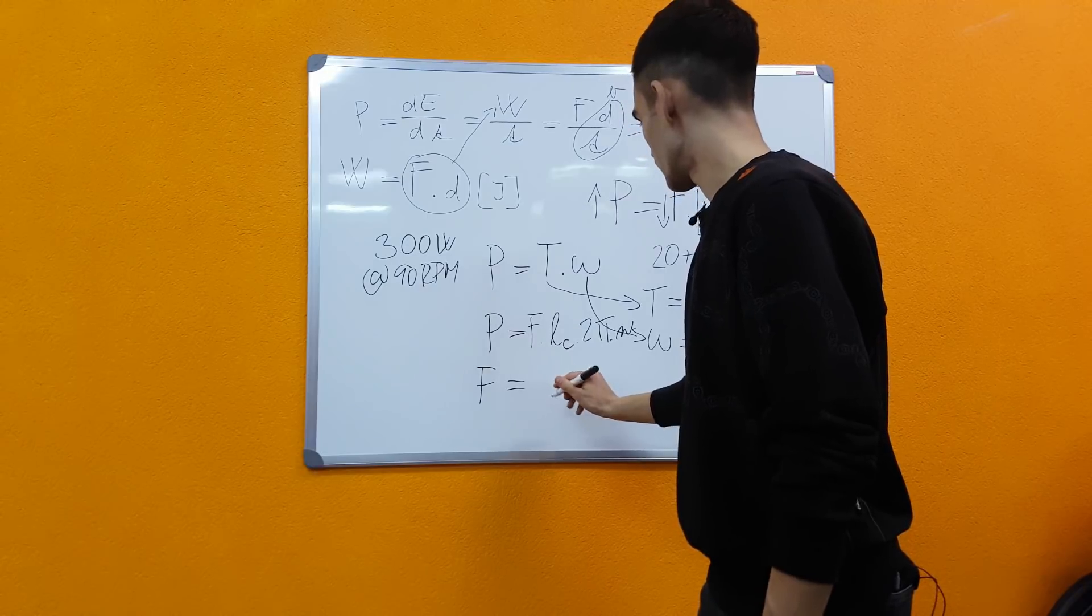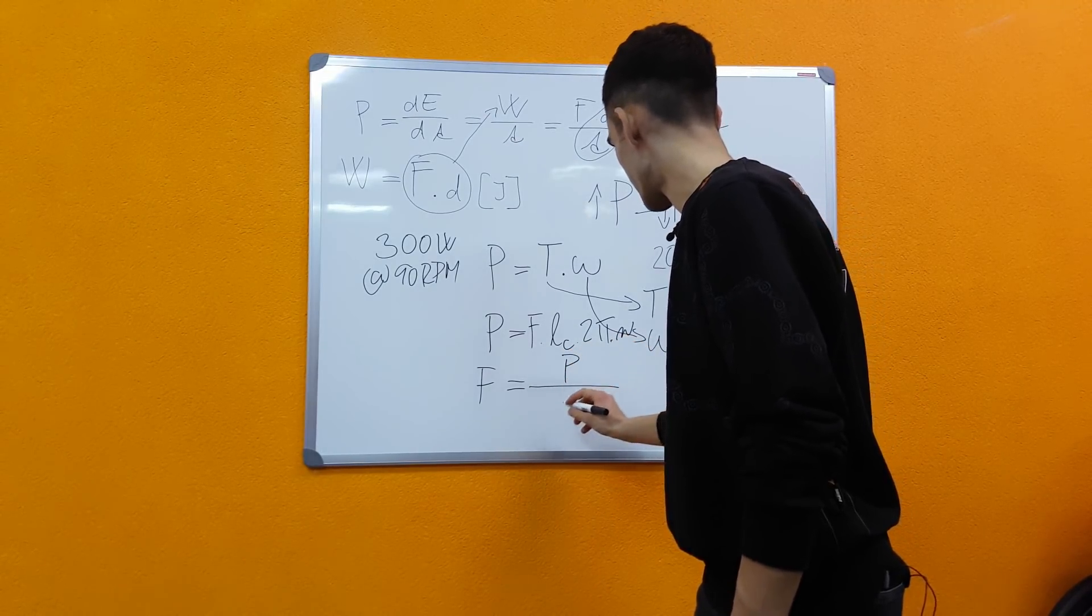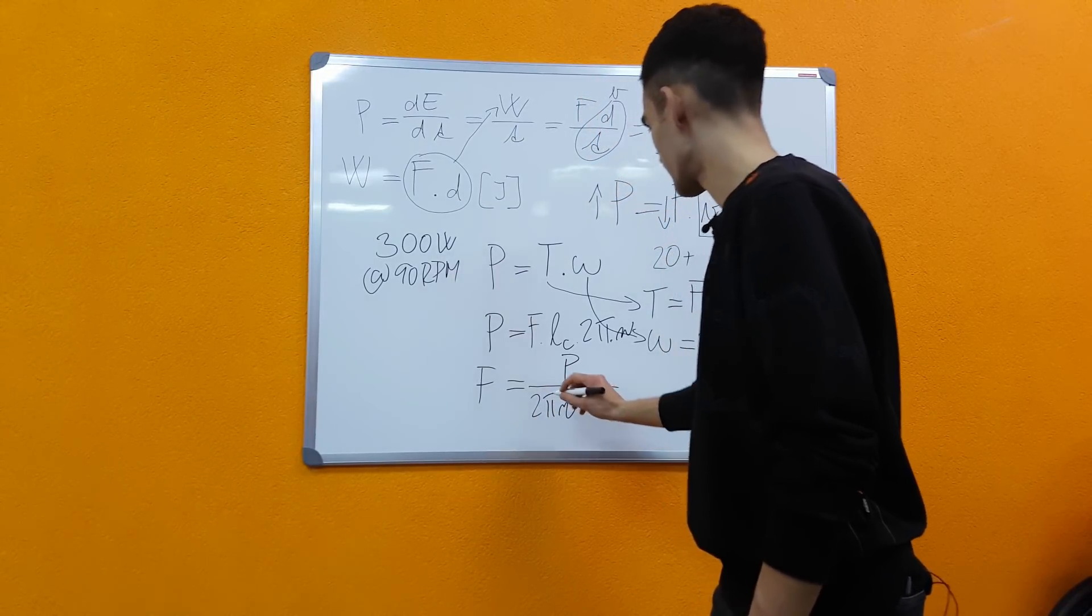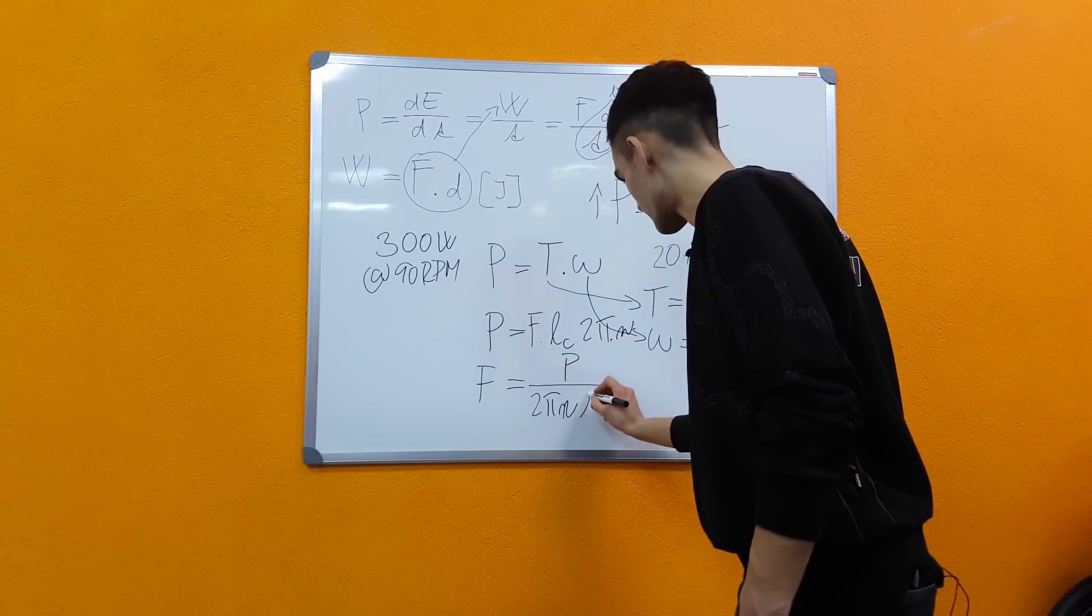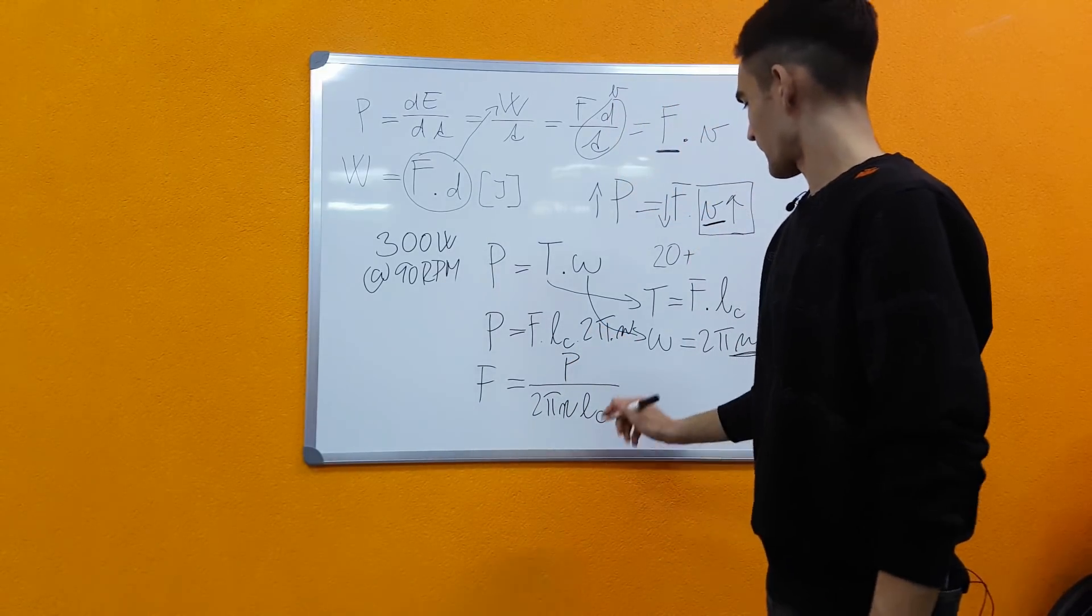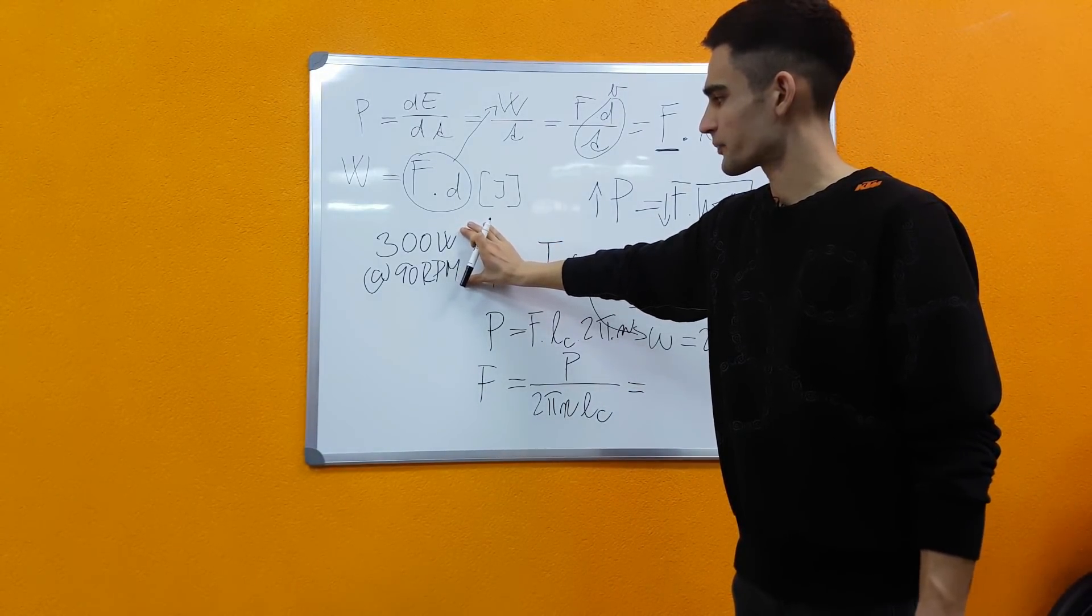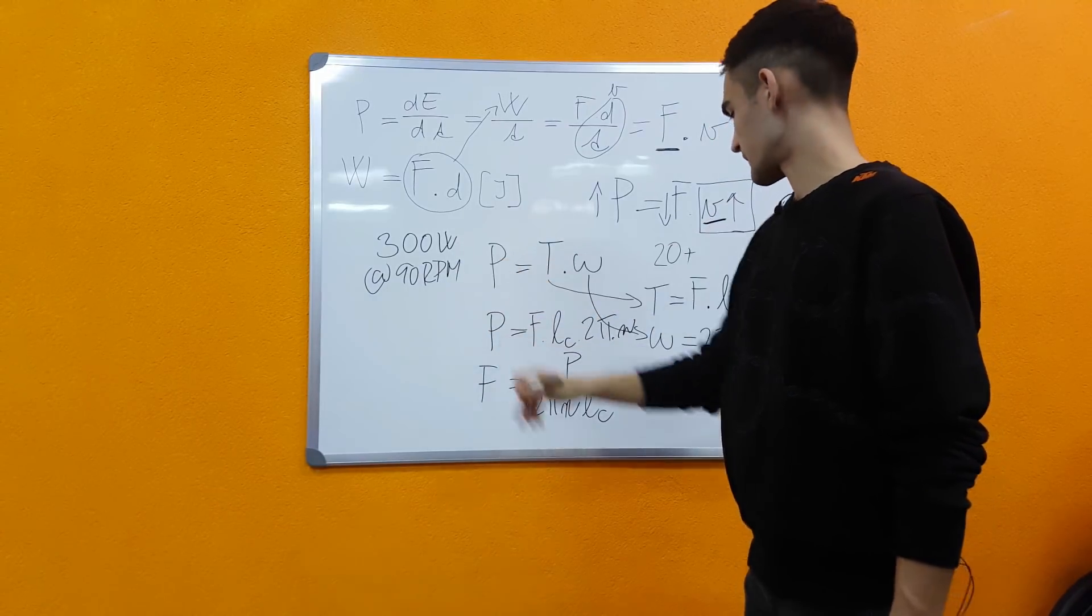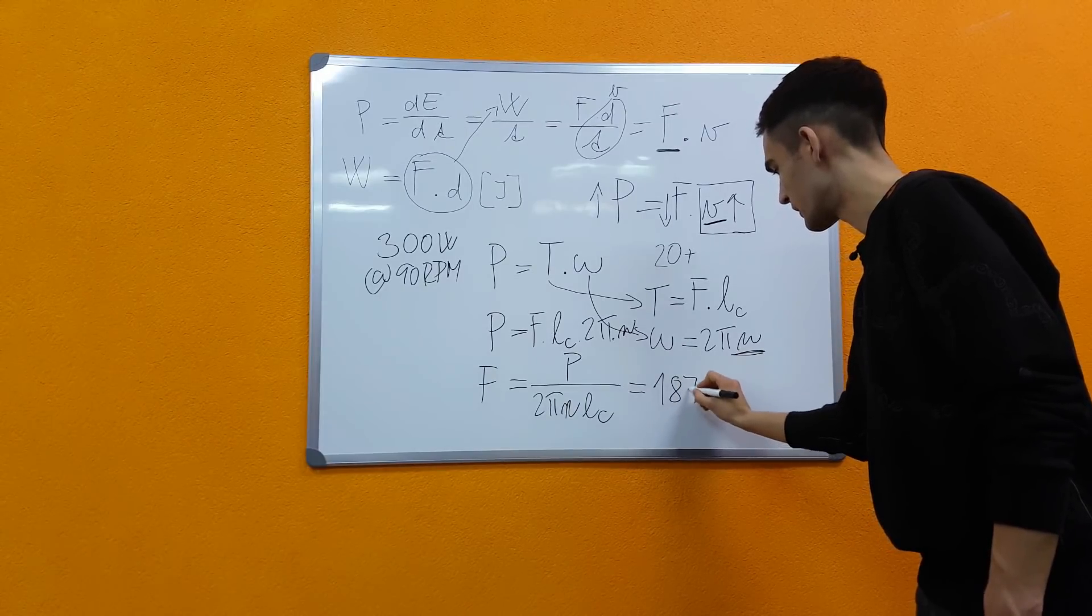If you put everything on the other side then we get the following. So our force will be power divided by 2π times the cadence times our crank length. And we get that for this power at this cadence, which is fairly normal and a fairly high power for most riders, you only need to apply 187 newtons.